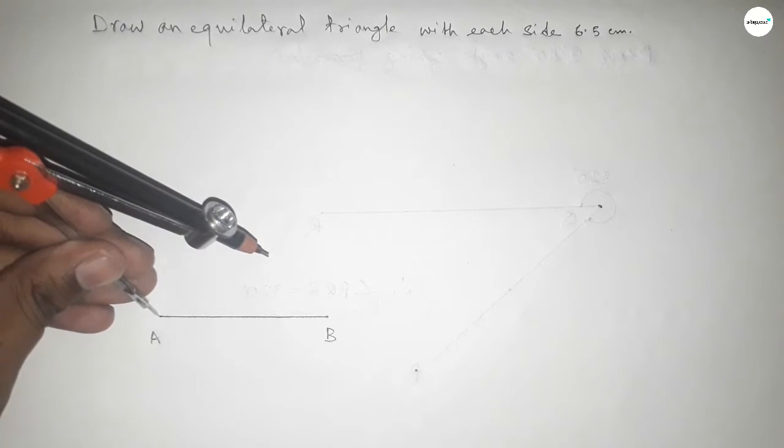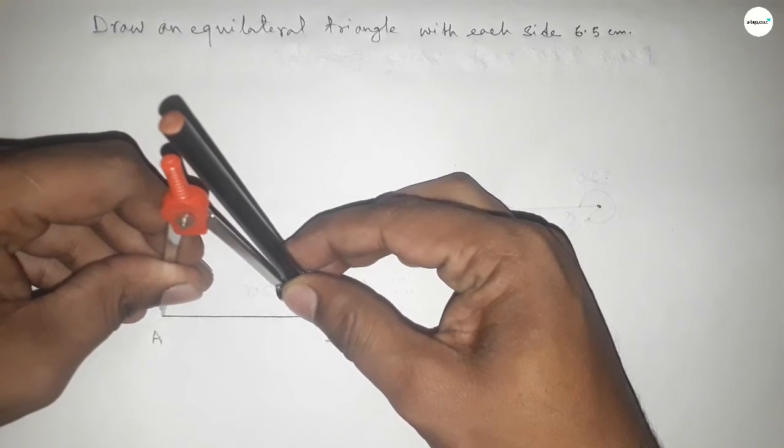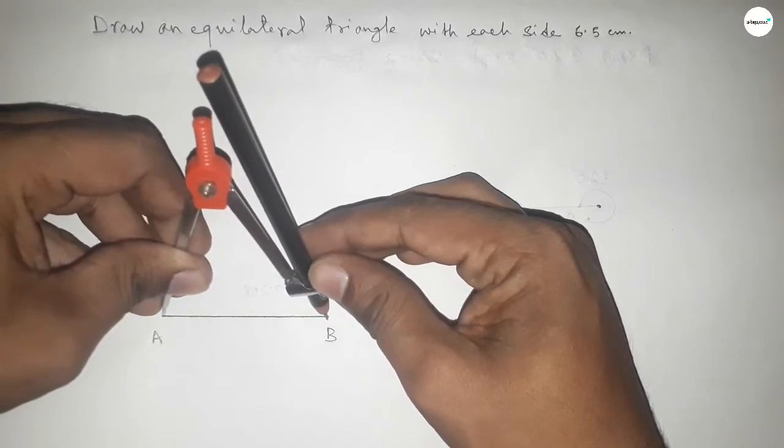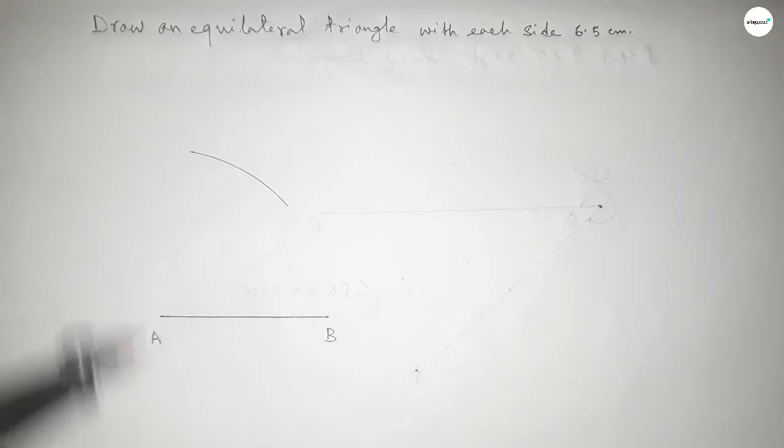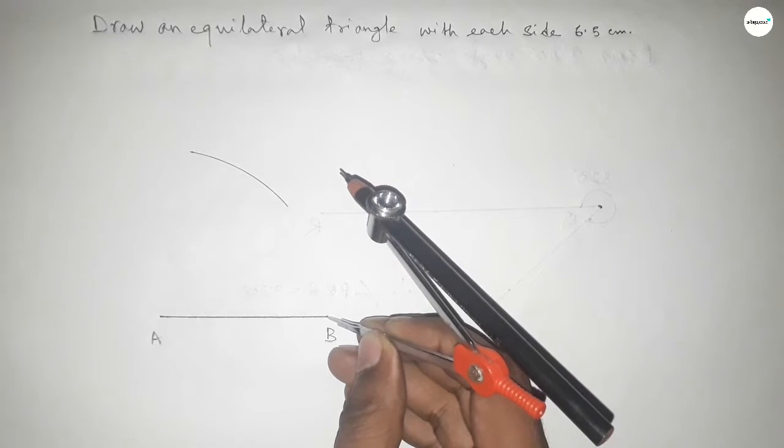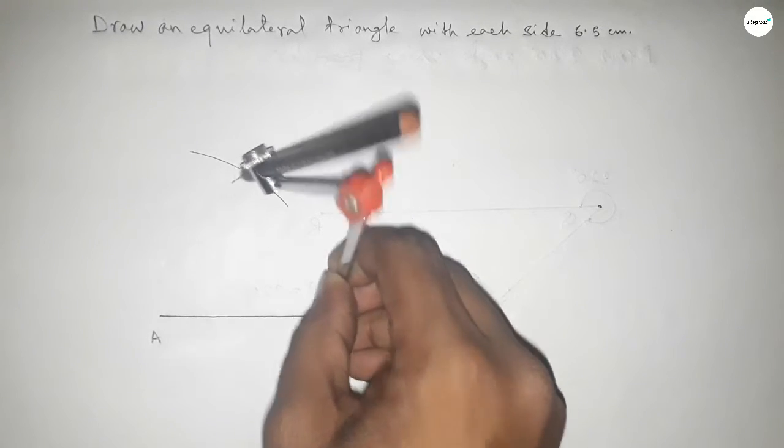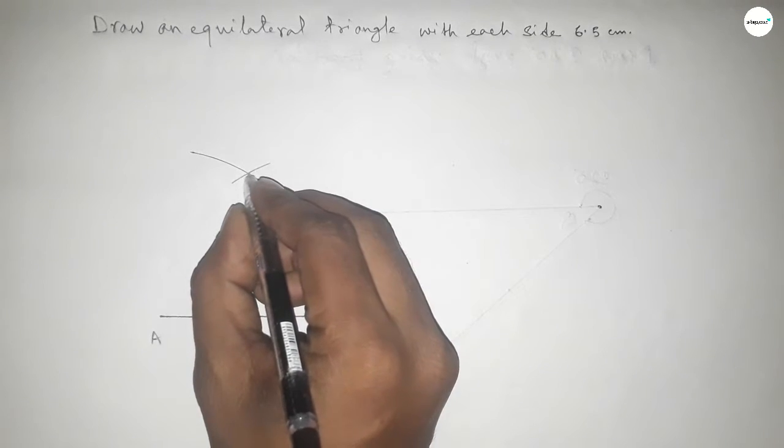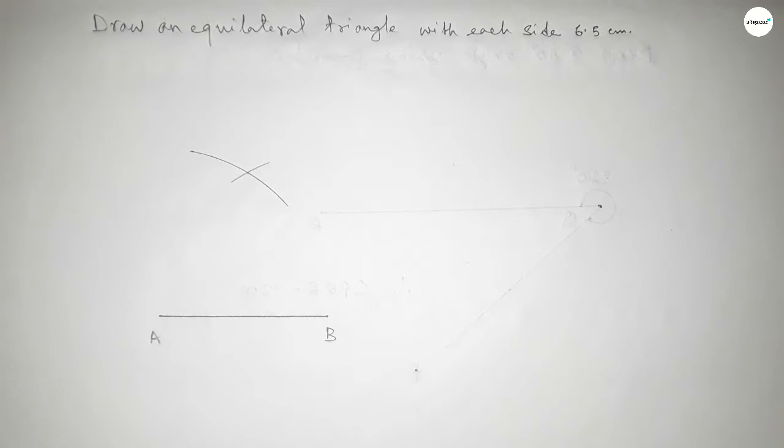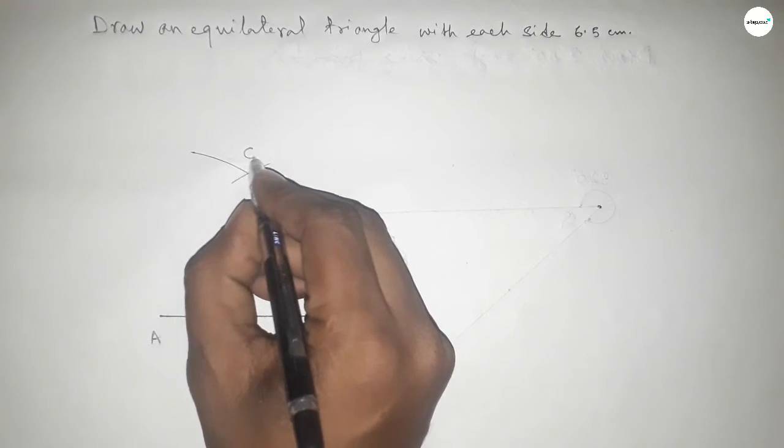Now taking the length AB by compass by this way and drawing an arc here with same length and putting the compass here and cut here. Both curves intersect at a point and this is C point.